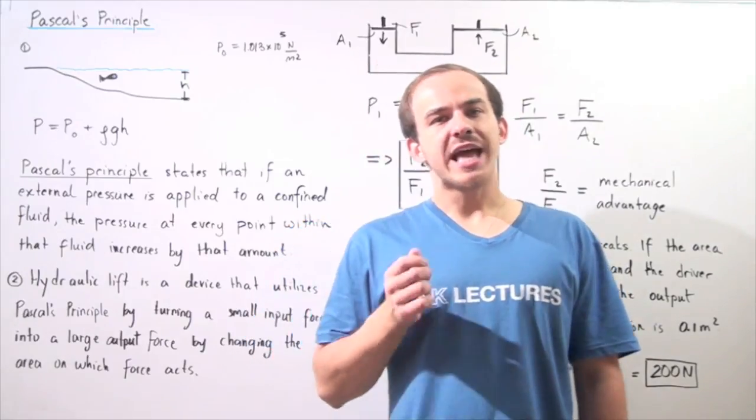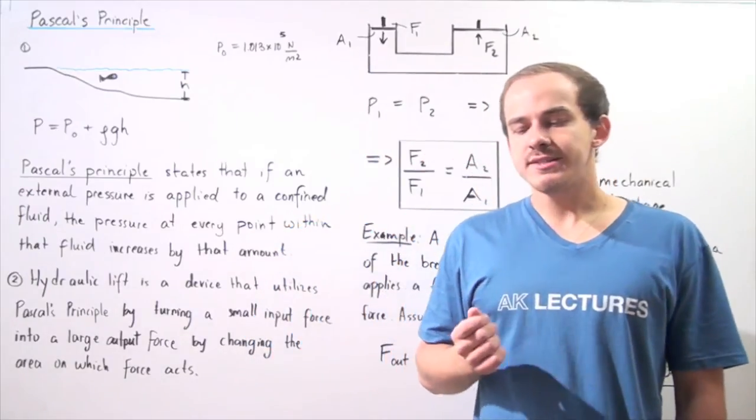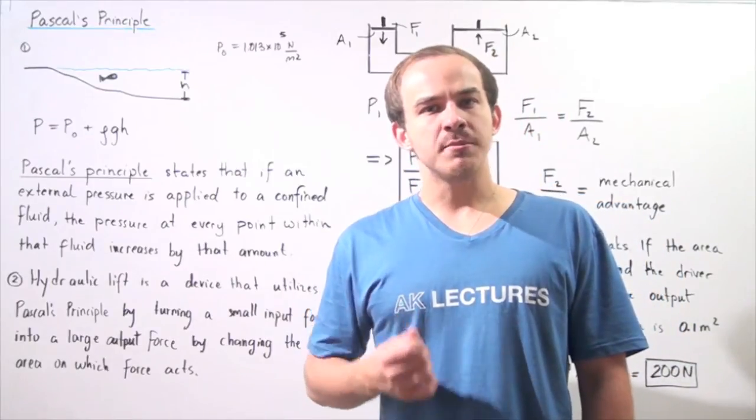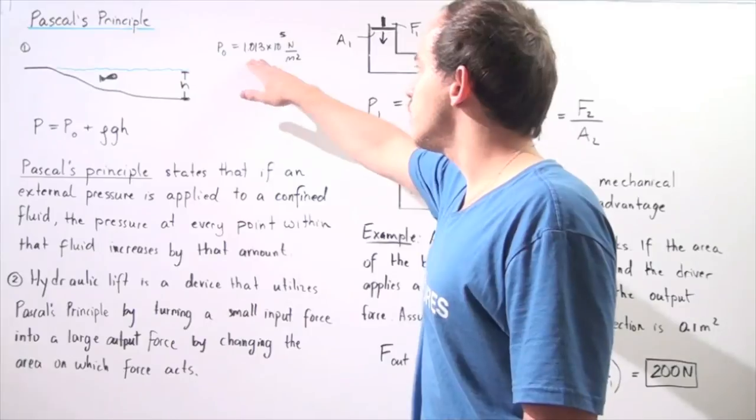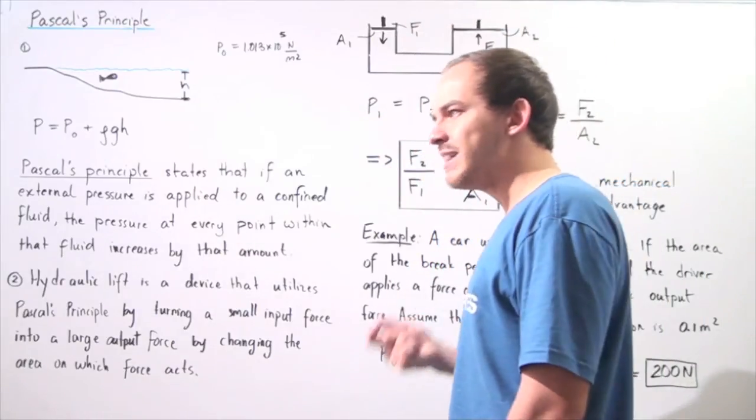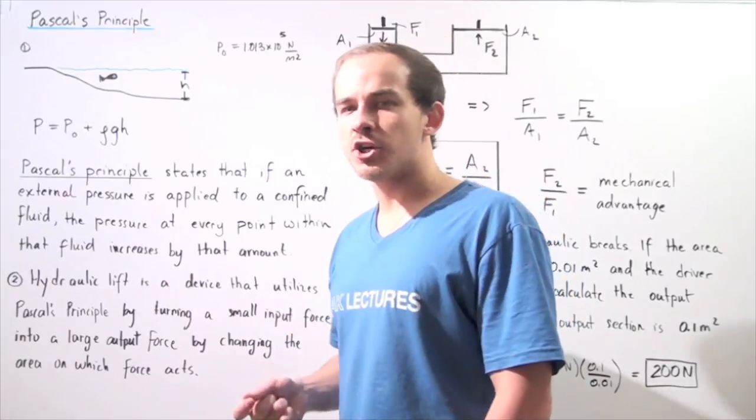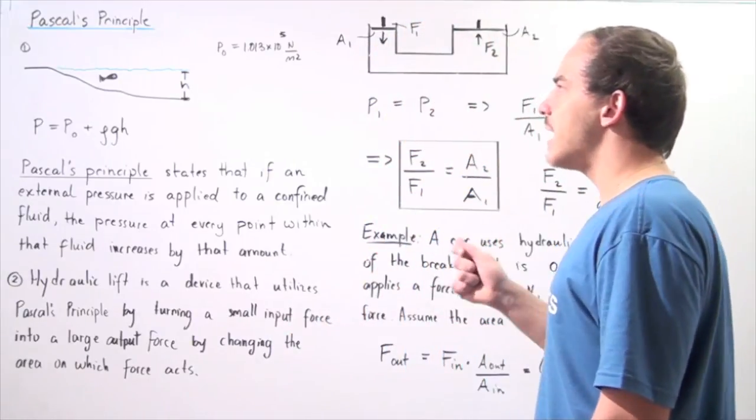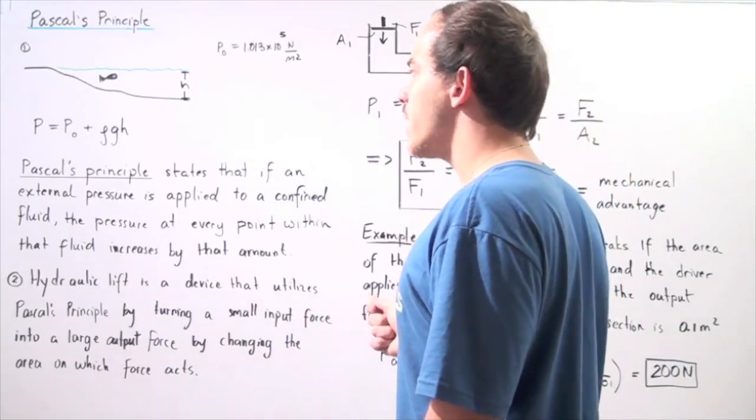Recall that when we spoke about atmospheric pressure, we said that at sea level our atmosphere is able to create a pressure that is equal to this quantity. The molecules and atoms that compose our atmosphere create a pressure equal to 1.013 times 10 to the 5 newtons per meter squared.